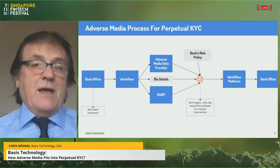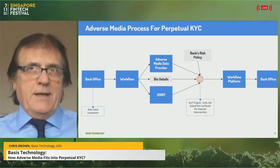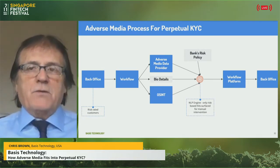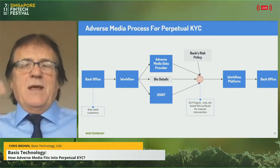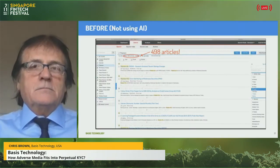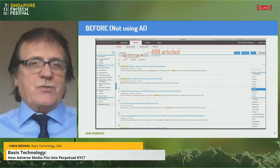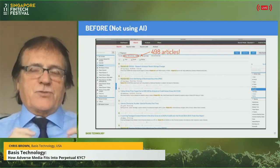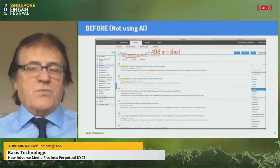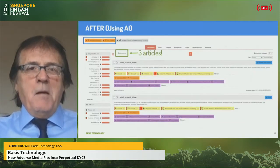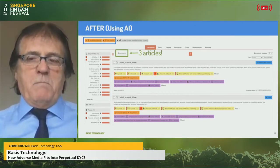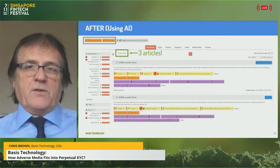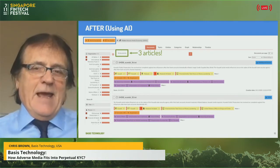Some organisations also use open source intelligence — gathering data from the worldwide web — which is a great tool. You then apply artificial intelligence and natural language processing, a tool that reads text written by human beings, and link that to the bank's risk policy. The whole process goes back to the back office and starts again. For example, without AI one search returned 498 articles. By bringing in AI you can surface what's important, build filters, and repeat those filters over and over.